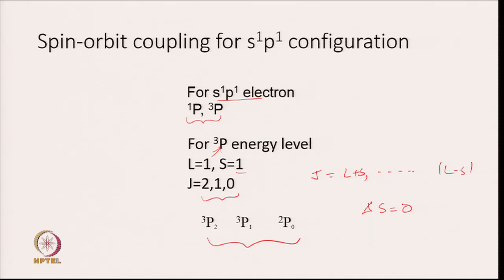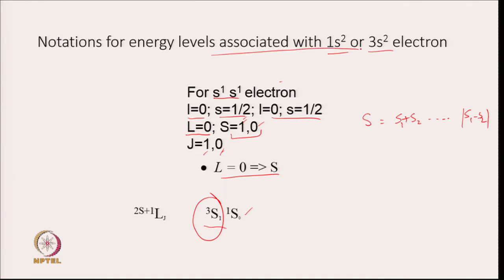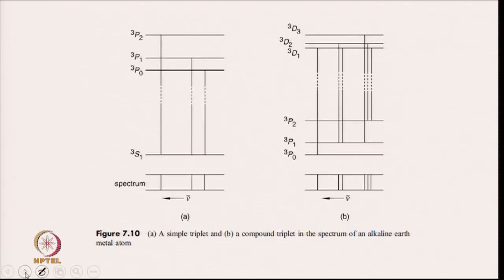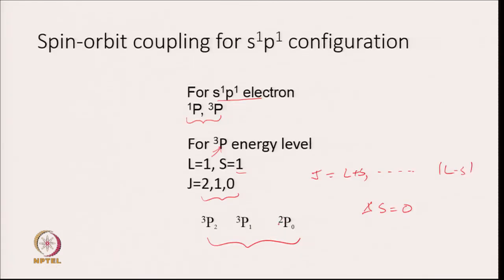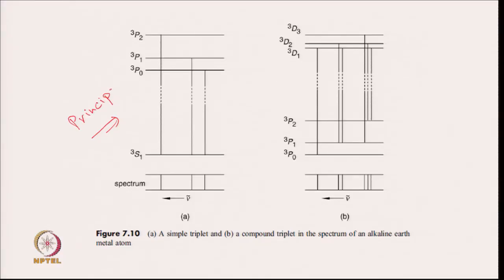The ³S₁ level has only one energy level when the configuration is 1S², while the P level splits into three levels: ³P₂, ³P₁, and ³P₀. Transitions from ³S₁ to all three ³P levels are allowed since delta J = −1, 0, and +1 respectively. This gives a simple triplet, and since the electron ends in the ³P level, this corresponds to the principal series.